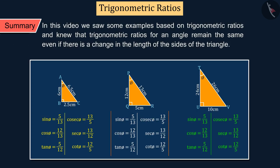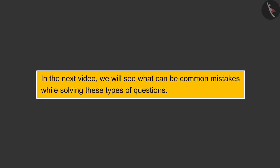In this video, we saw some examples based on trigonometric ratios, and got to know that trigonometric ratios for an angle remain the same, even if there is a change in the length of the sides of the triangle. In the next video, we will see what can be common mistakes while solving these types of questions.